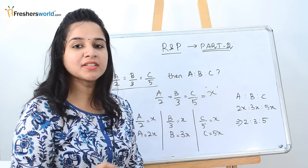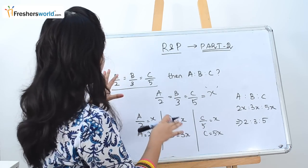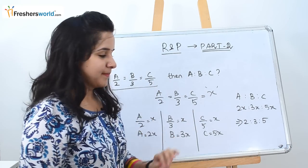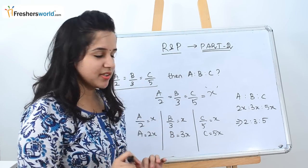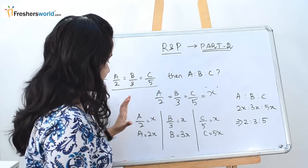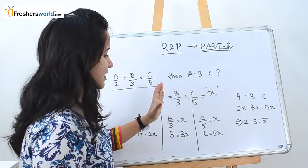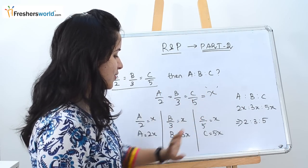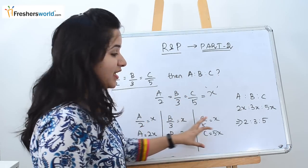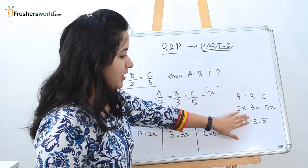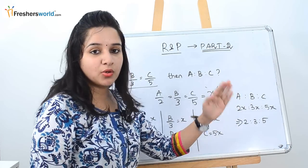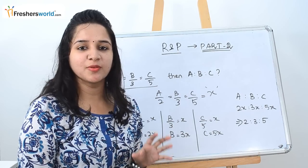If you are experienced with ratios and proportions, you can directly write the answer as 2:3:5 by inspection. If not, take the question, equate it to a constant x, then separately solve A/2 = x, B/3 = x, C/5 = x. Whatever values you get, substitute them to find A:B:C. Sometimes you'll get a larger ratio that you can reduce to match the answer options.